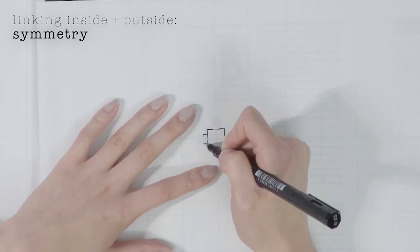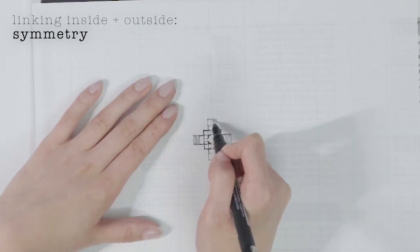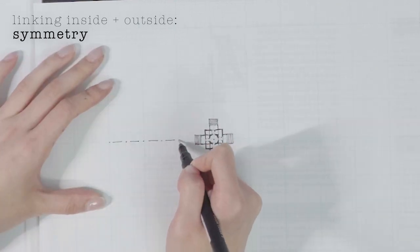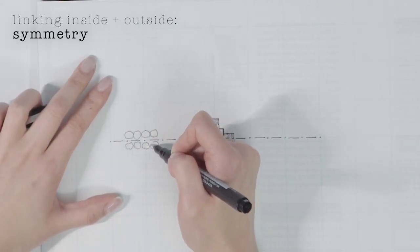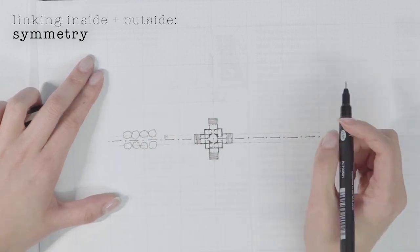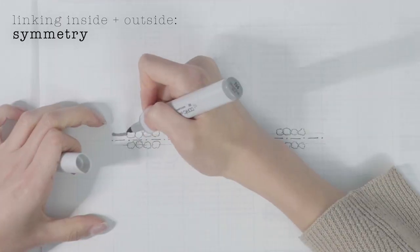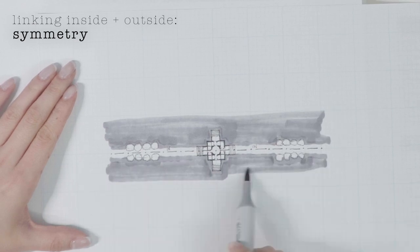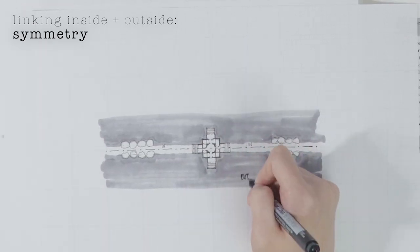If you have a really symmetrical building, you can continue that symmetry onto the landscape. And as soon as you step off the axis, that's when you truly feel outside, even though we don't have any actual walls creating that boundary.